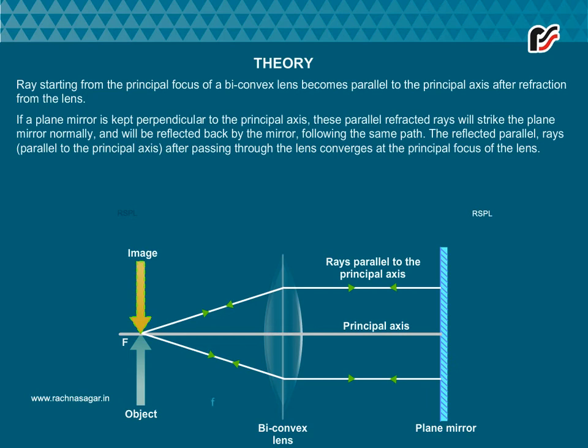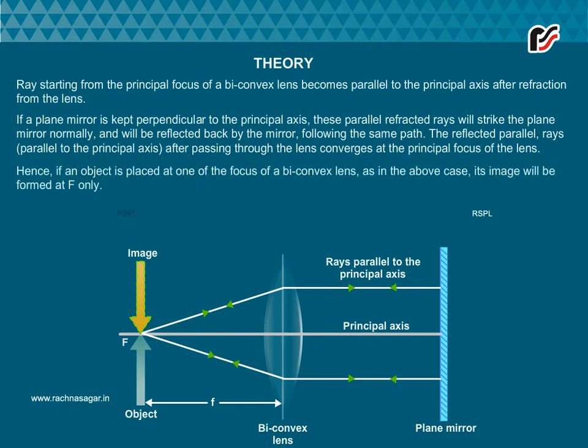If a plane mirror is kept perpendicular to the principal axis, these parallel refracted rays will strike the plane mirror normally and will be reflected back by the mirror following the same path. The reflected parallel rays, parallel to the principal axis, after passing through the lens converge at the principal focus of the lens.